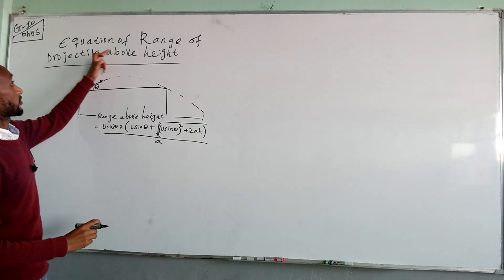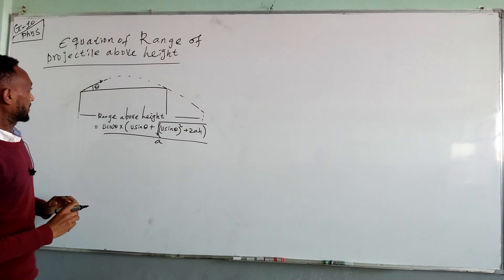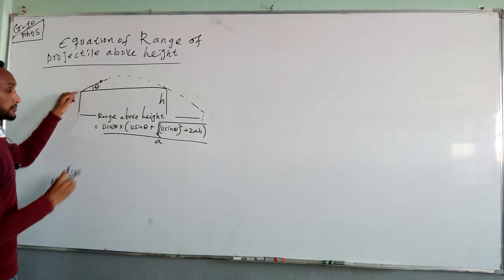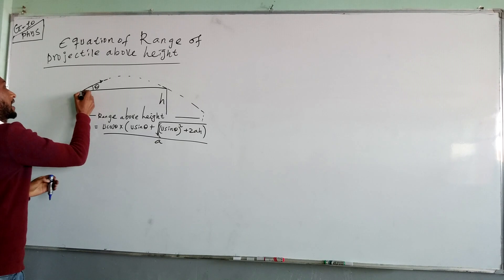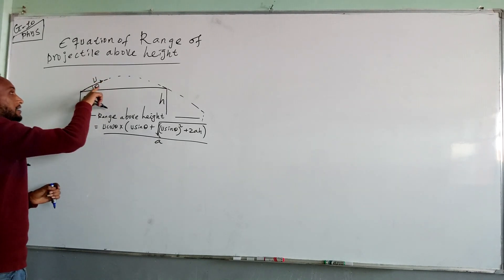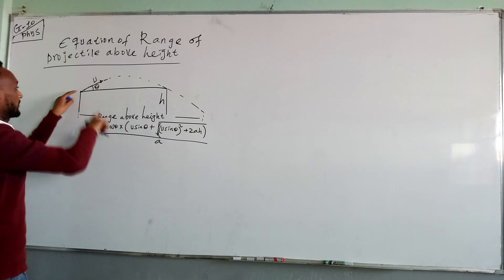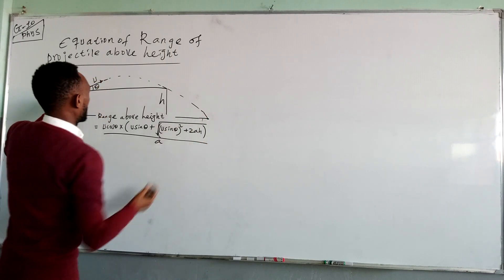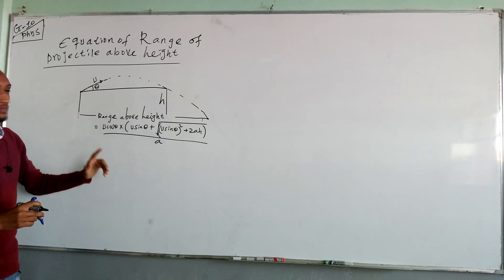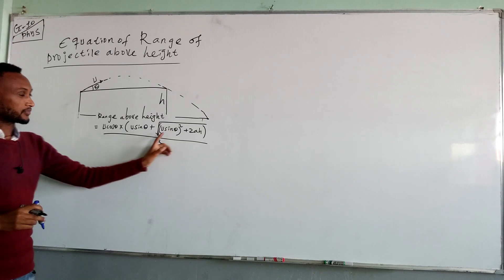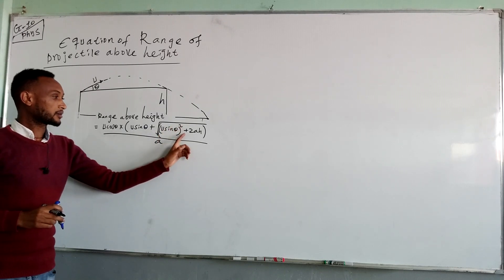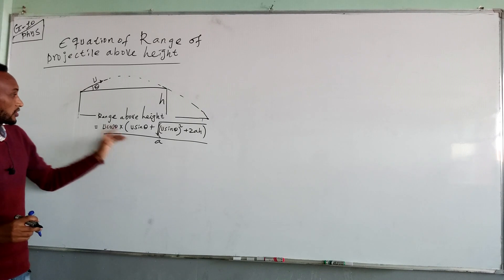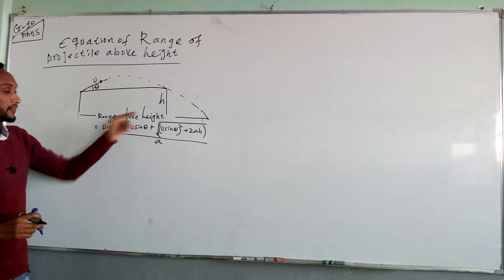This is the equation of a range above height h, or the range of projectiles above some height. This is the height at which the projectile occurs. Initially, the body is projected from here by initial velocity at an angle of projection theta, then finally lands at this point. The range above some height is given by u cos θ times (u sin θ plus the radical of u sin θ squared plus 2ah) over a.